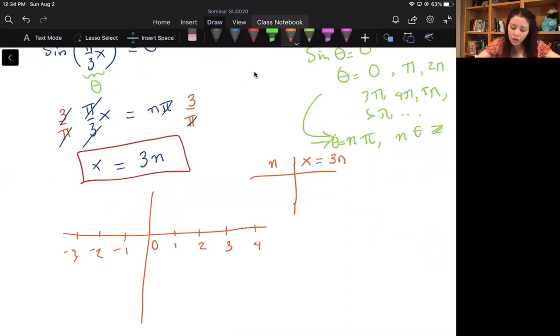When n equals 0, x also equals 0, because 3 times 0 is 0. So your vertical asymptote is actually right at your y-axis. When n equals negative 1, x equals 3 times negative 1 is negative 3. So your vertical asymptote is here. Well when n equals 1, x equals 3. So your vertical asymptote is here.